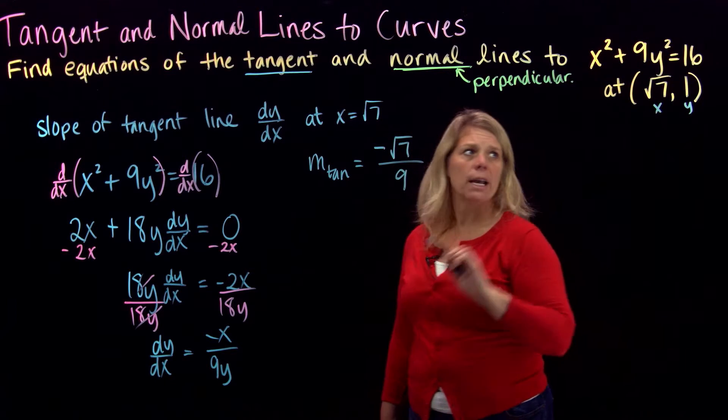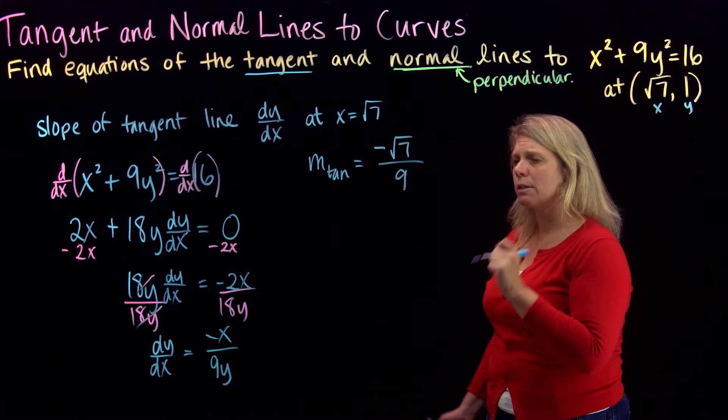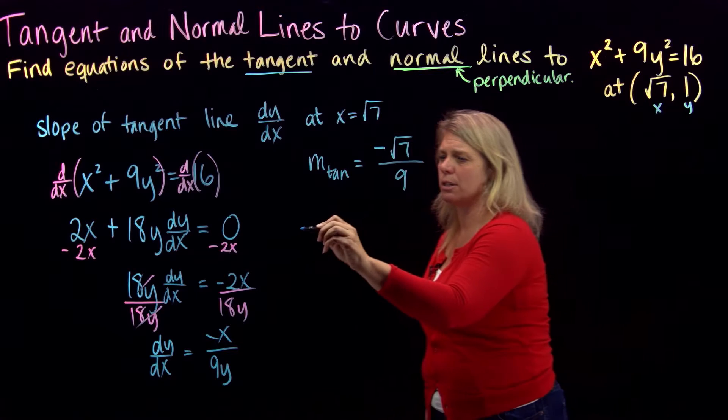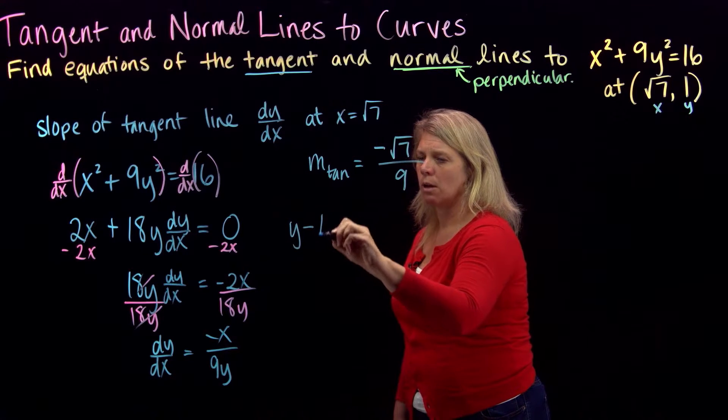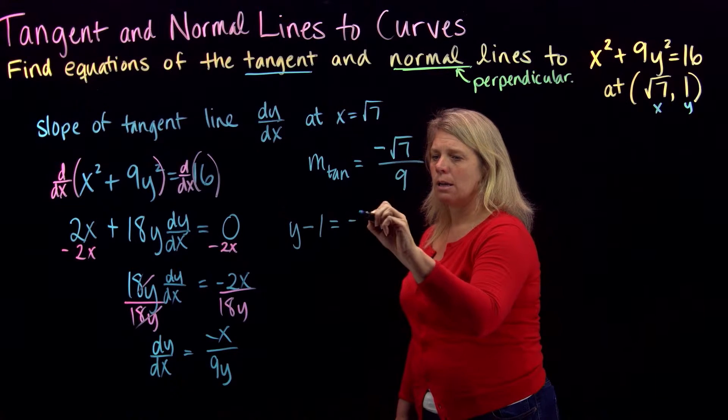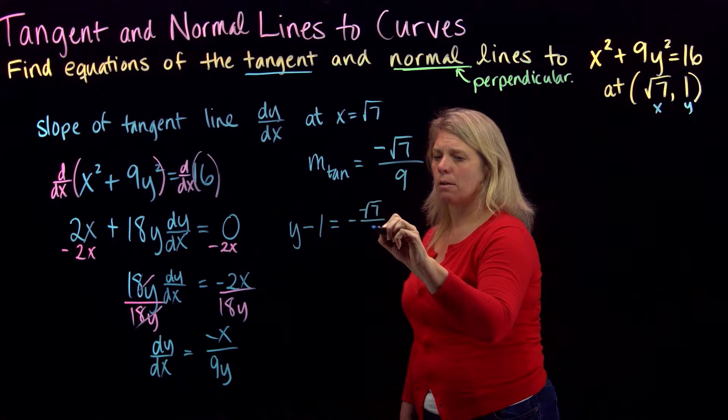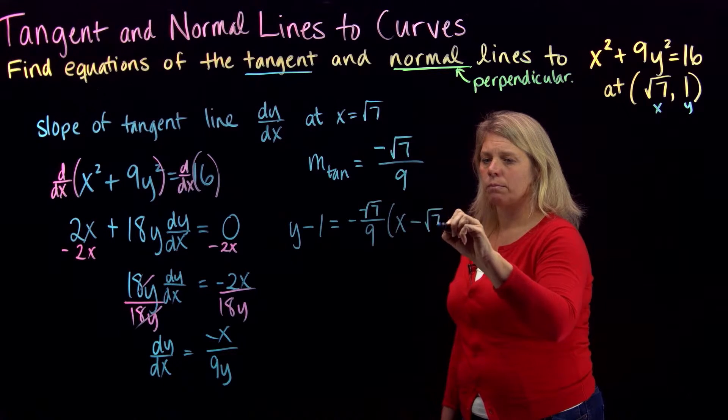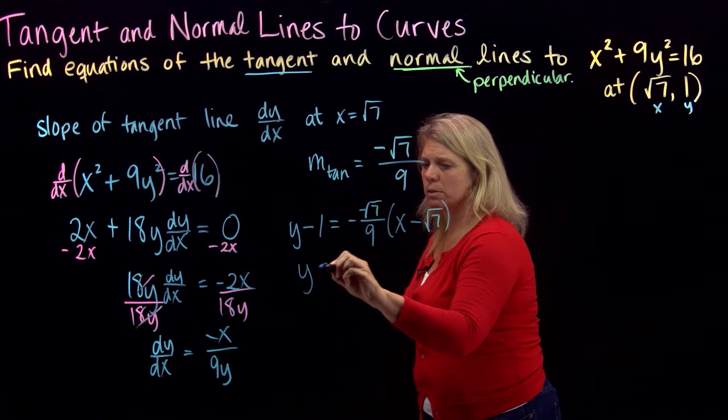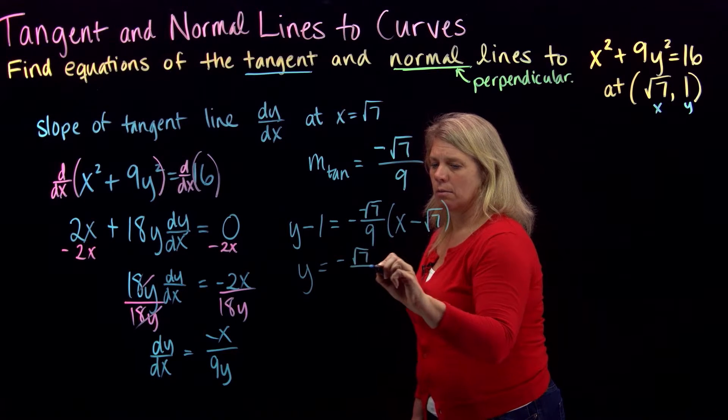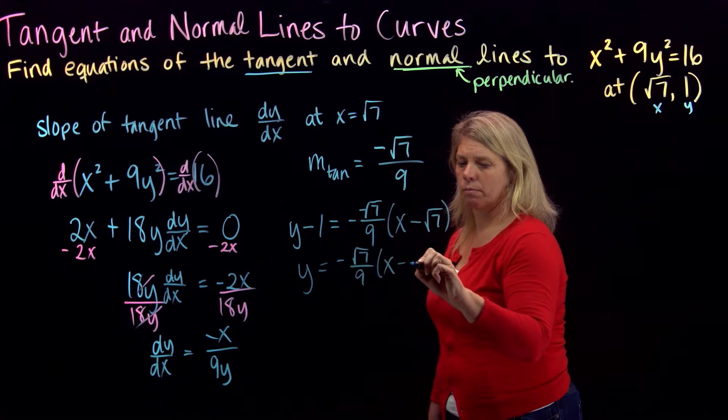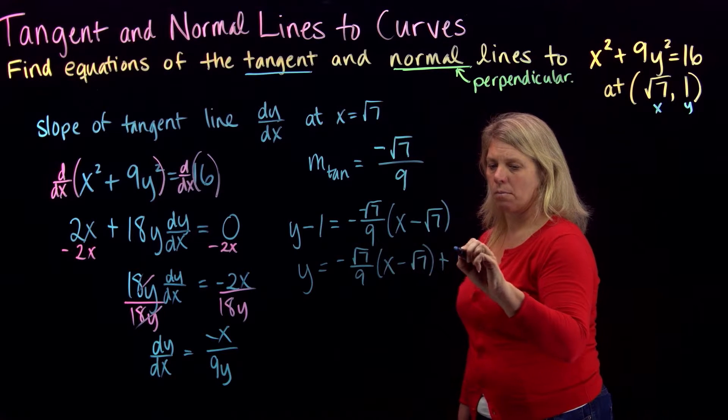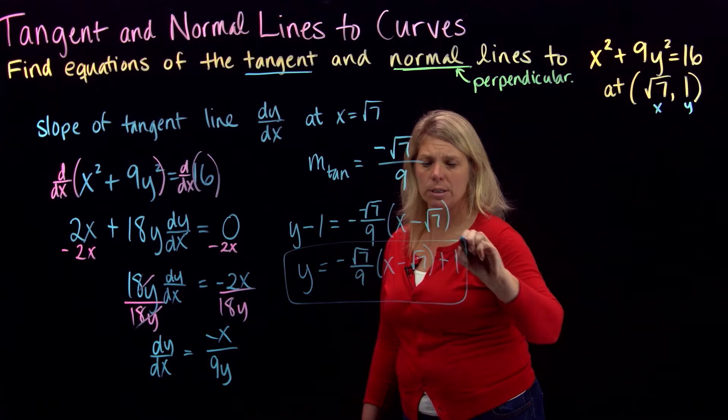All right, so that is the slope of my tangent line. I've already got a point here, so we can just write the equation of that tangent line using point slope form. y minus y1 equals m times the quantity x minus x1. And if you want to solve for y, you can add 1 to both sides. All right, so there's the equation of our tangent line.